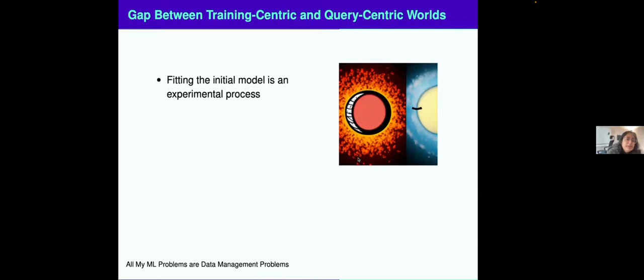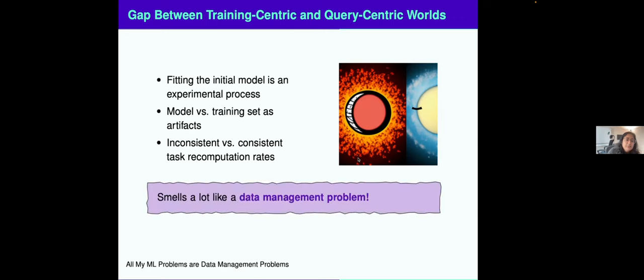What is the gap between the training centric and query centric worlds? In the training centric world, fitting the initial model is really an experimental process. Can we even get a good model? What is the best model even look like? What is a good set of features? In the training centric world, the model itself is really an artifact. Whereas in the query centric world, the training set, the store of all examples, that is mainly the artifact that we want to manage in production over time. In training centric worlds, your tasks are recomputed inconsistently. Data preparation is run differently than model retraining. Those may be run batch offline, different schedules. But in the query centric world, once you get a new query, all of your data is as fresh as possible, it's clean. We have those guarantees. And you've seen this word consistency, consistent data all over my slides. This smells a lot like a data management problem.